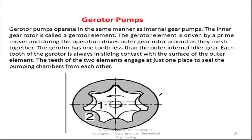Gear rotor pumps are another type of gear pump and operate in the same manner as the internal gear pump. The inner gear rotor is called the gerotor element. It is driven by the prime mover and in turn drives the outer gear rotor. The gerotor has one tooth less than the outer internal idler gear. Each tooth of the gerotor is always in sliding contact with the surface of the outer element. The teeth of the two elements engage at just one place, sealing the pumping chambers from each other and creating a pressure region.